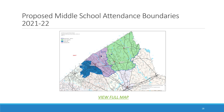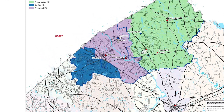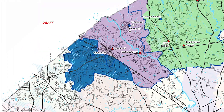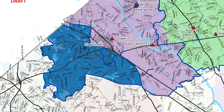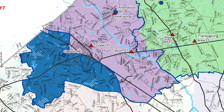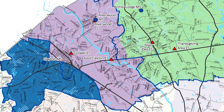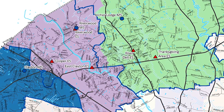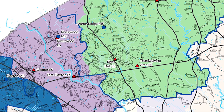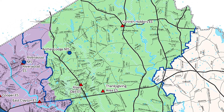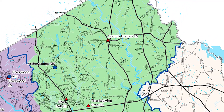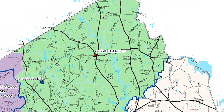Use the link in slide 18 to view a detailed street level map of the proposed middle school boundaries. The map includes current middle school boundaries as a blue line, and the proposed attendance areas are various colors.